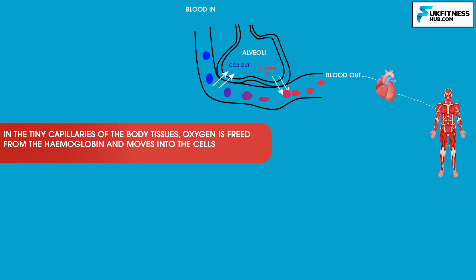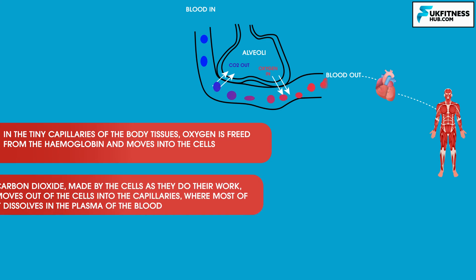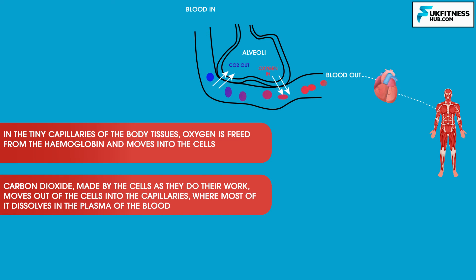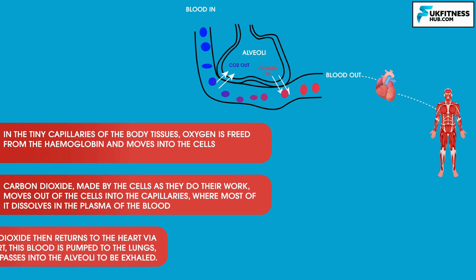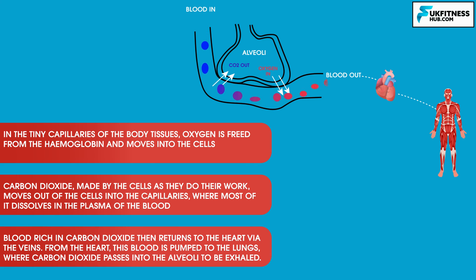In the tiny capillaries of the body's tissues, oxygen is freed from the haemoglobin and moves into the cells. Carbon dioxide, made by the cells as they do their work, moves out of the cells into the capillaries, where most of it dissolves in the plasma of the blood. Blood carrying carbon dioxide then returns back to the heart via the veins, and from the heart this blood is pumped to the lungs where carbon dioxide passes into the alveoli to be exhaled.